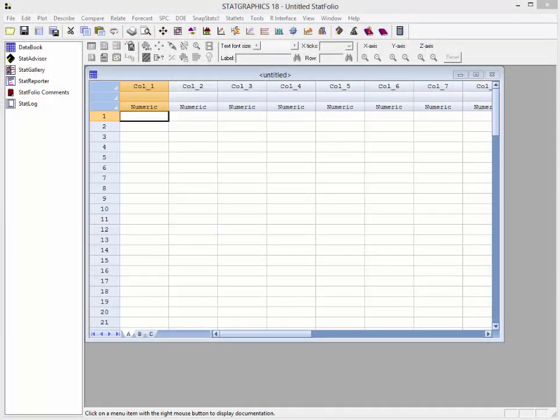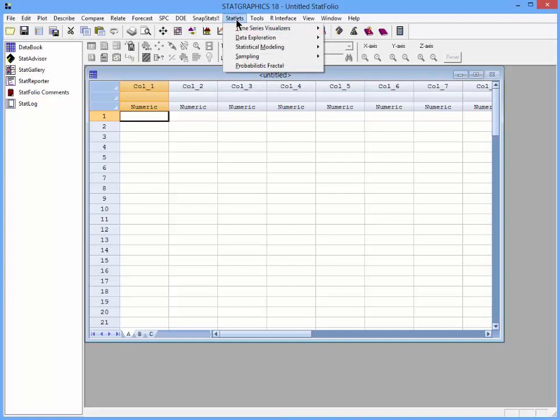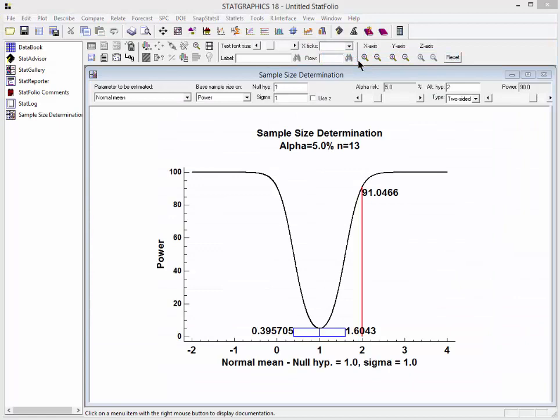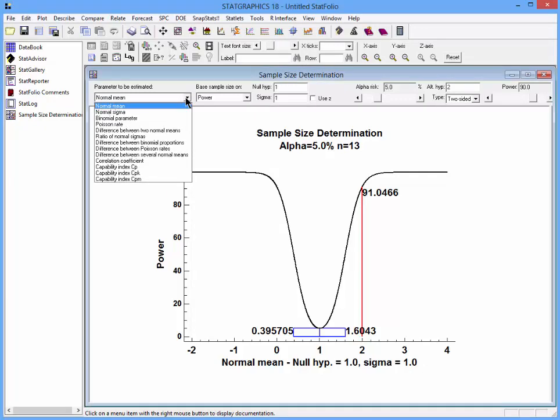To show you how this works, I've loaded StatGraphics 18. I'm now going to go to the top menu and select Statlets, Sampling, Sample Size Determination. This will open up a statlet window, which I can use to determine sample sizes for a number of different parameters.